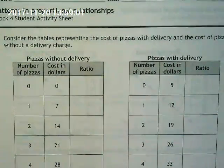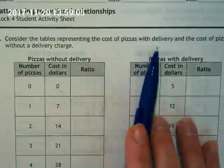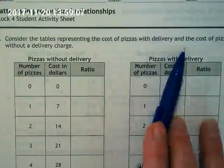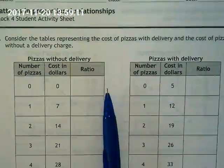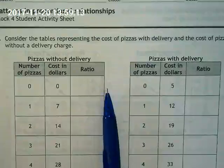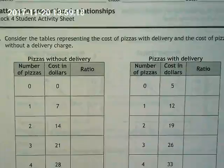I want you guys to look at the top here for number one. It says consider the tables representing the cost of pizzas with delivery and the cost of pizzas without a delivery charge. We're continuing our work from the problems we did the other day. This time we're going to make a ratio and I want to remind you of a couple things so pick up your pencil.